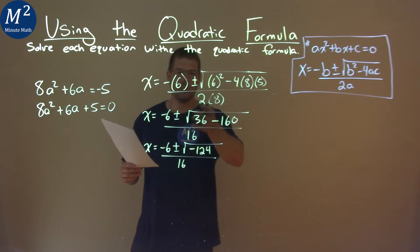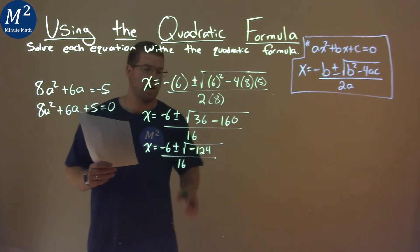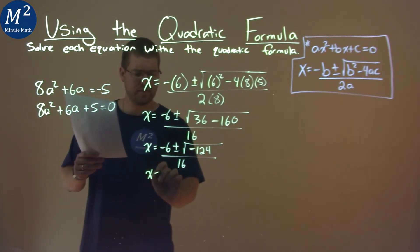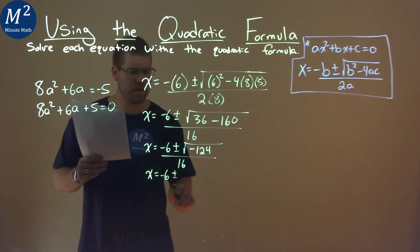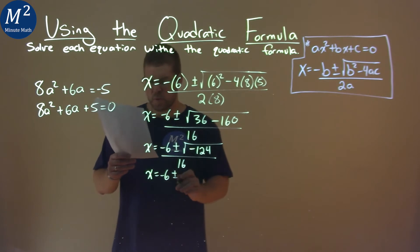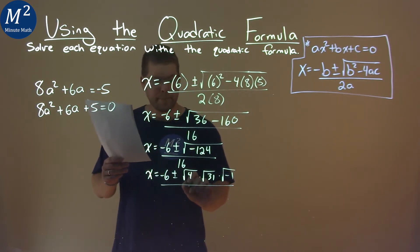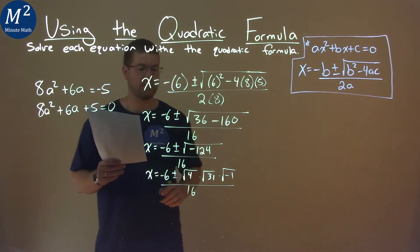Right now we have a square root with a negative. That means we have an imaginary number. So how does this break down? x equals negative 6 plus or minus, and the square root of negative 124 could be broken down to be the square root of 4 times the square root of 31 times the square root of negative 1, and it's all over 16.